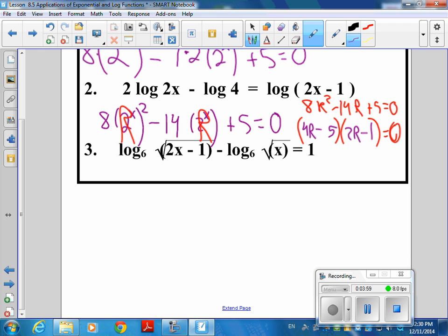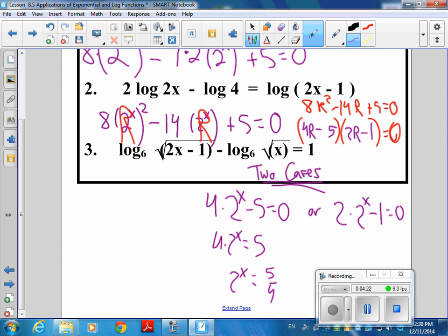And then, of course, r isn't r, it's 2 to the x minus 5 equals 0. So we're going to have 4, 2 to the x equals 5, 2 to the x equals 5 fourths. And this will be 2 to the x is equal to 1 half.